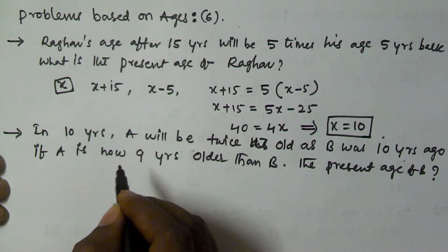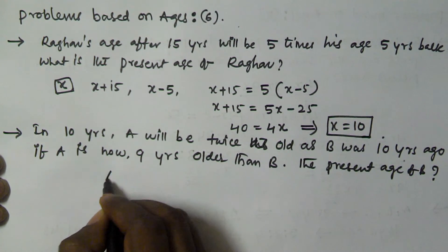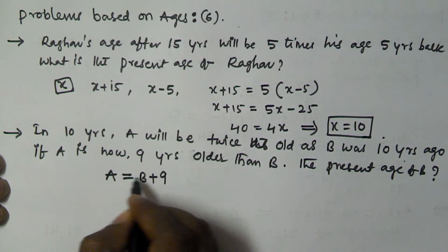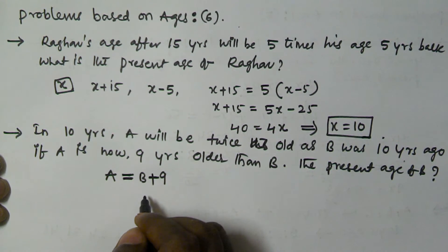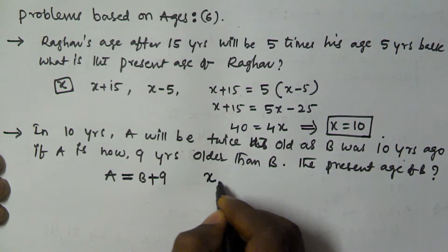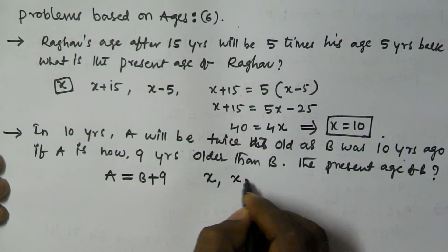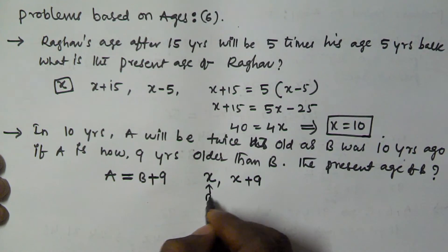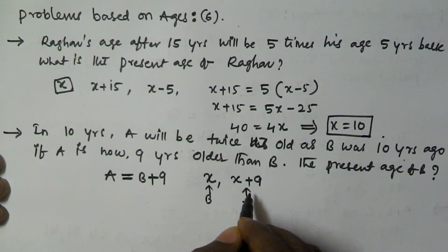Currently A is 9 years older than B, that is A is equal to B plus 9. So if B's age is x, then A's age is x plus 9, because A is older than B.